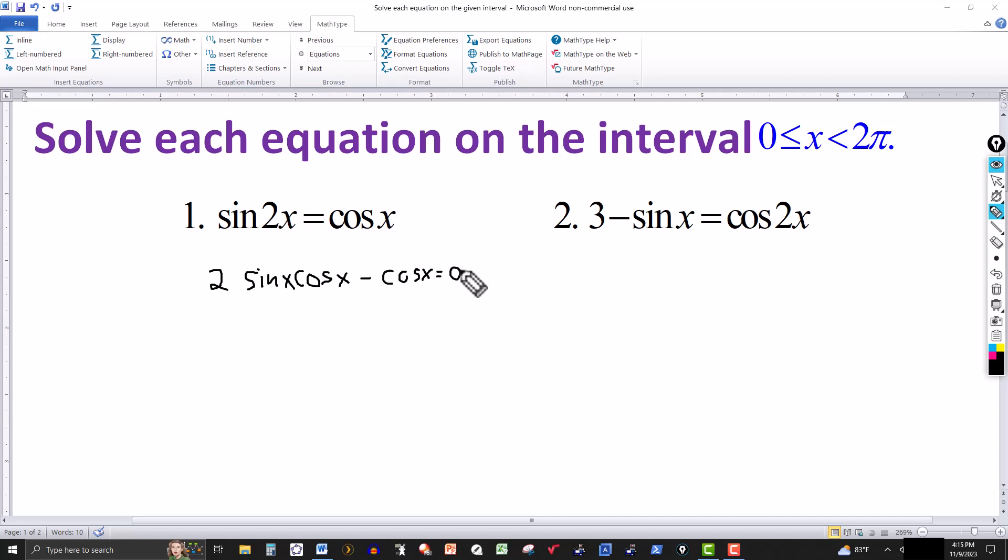Just like in algebra, you solve quadratic equations or other equations by factoring. So now we have it in this form. We can factor out the cosine, and that leaves us with 2sin(x) - 1. Once we have it factored, the product of two factors is 0 if one or both are 0. So we set each factor equal to 0.